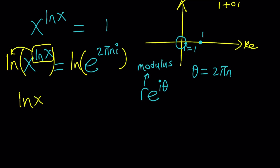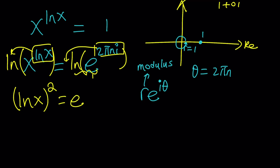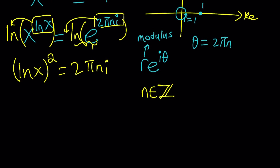That gives us (ln x)² on the left. On the right, ln e equals 1, so we just get the exponent: 2πni. Here n is an integer — it can be positive, negative, or even 0. If n equals 0, you get ln x equals 0, which gives x equals 1 as the real solution. But since we're looking for more solutions, let's keep n general.